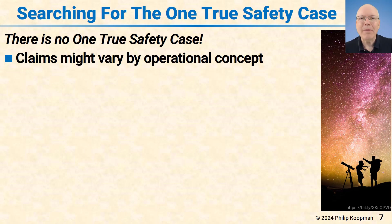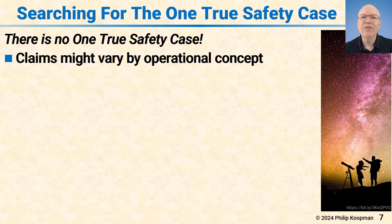Why might that be? The claims of safety are going to vary by operational concepts, so acceptable safety and the claim structure will probably vary depending on what you're trying to build. A sidewalk robot versus a low-speed passenger transport versus a highway-speed heavy truck are going to have very different requirements for safety and architectural approaches.